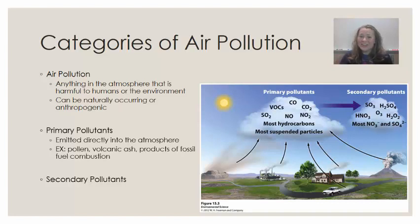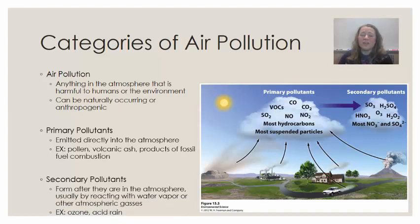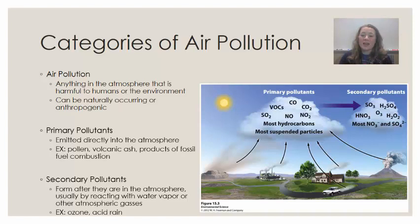Secondary pollutants are a little different. These form in the atmosphere — they are the product of some kind of reaction after a primary pollutant is already in the atmosphere. As shown in the image on this slide, primary pollutants are turned into secondary pollutants, usually after a reaction with water vapor, sunlight, or some other atmospheric gas.